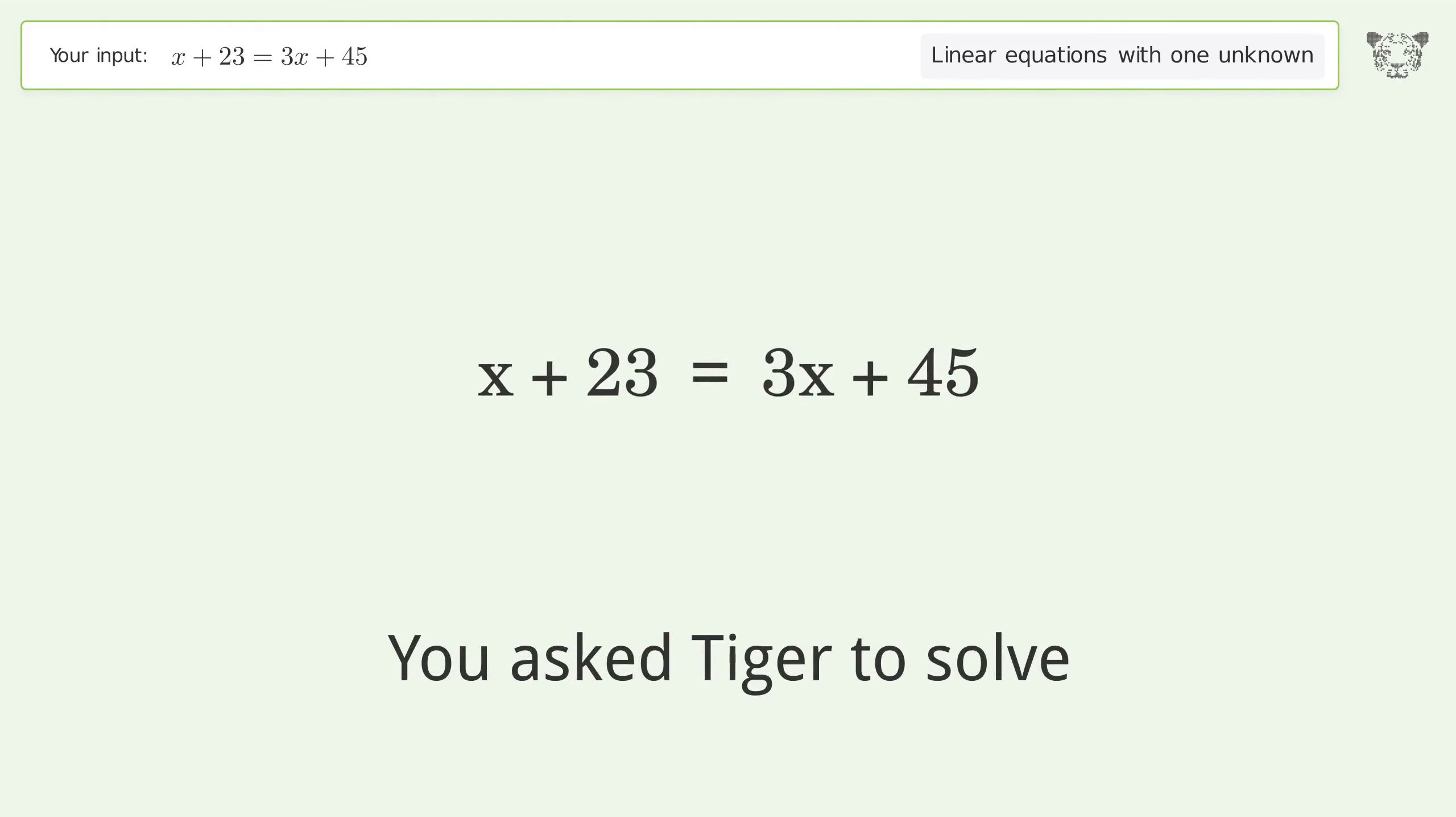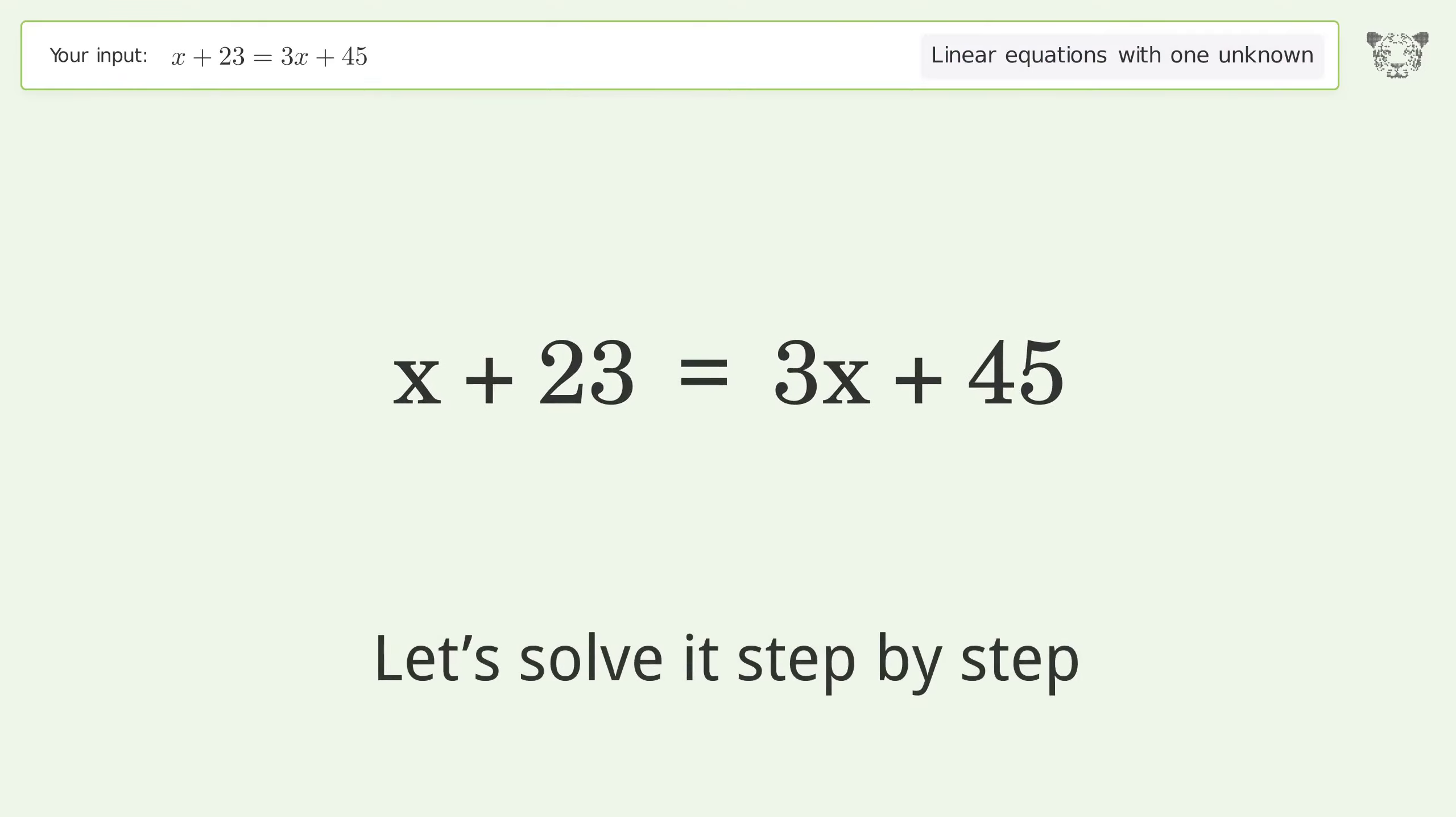You asked Tiger to solve. This deals with linear equations with one unknown. The final result is x equals negative 11. Let's solve it step by step.